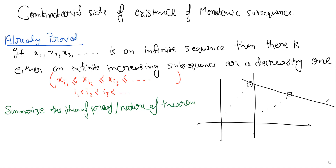If you try to put it in terms of increasing and decreasing: if you try to avoid an infinite increasing subsequence, then there has to be an opposing force — the decreasingness has to come in from time to time, and it has to keep coming in. And so that gives you a decreasing one. So if you try to avoid an increasing one, you get a decreasing one. That was basically the idea of the proof.